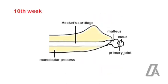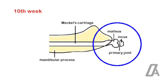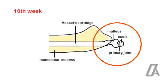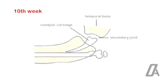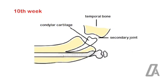The formation of the condylar process starts only at the tenth week. Until then, the malleus and incus function as a temporary joint with the glenoid fossa of the temporal bone to permit mandibular movements. Meckel's cartilage is replaced largely by bone, and the remnants remain as the malleus and incus. The condylar cartilage is a secondary cartilage, and its origin is unrelated to Meckel's cartilage, which is a primary cartilage.